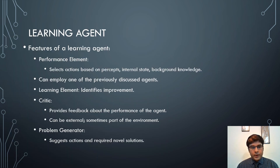A learning agent learns and applies that learning to its subsequent actions. Its features include: a performance element which selects actions based on percepts, internal state, and background knowledge — a learning agent can employ any of the previously discussed agents. A learning element identifies improvement. It also has a critic which provides feedback about the agent's performance, which can be external or part of the environment, and a problem generator which suggests actions requiring novel solutions.